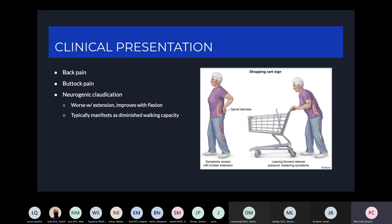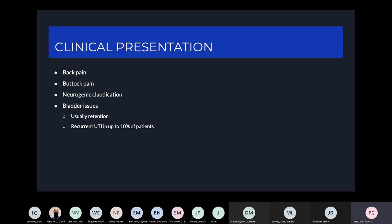You may see improvement with walking while bent over — leaning over a shopping cart is a classic sign. Typically, because extension makes the pressure worse, patients will have a diminished maximum walking distance before they have to sit down or bend over to relieve that pressure. Patients can also present with bladder issues, most commonly retention. However, you can also have recurrent UTIs in up to 10% of those patients.